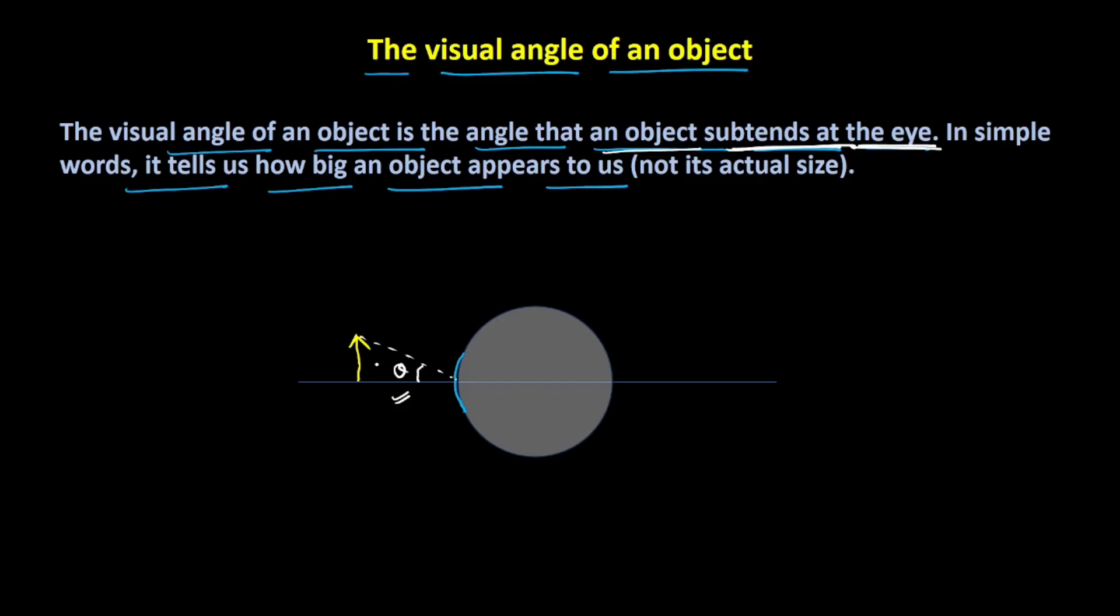More this angle, the bigger the object will appear to us. The light ray from this object will be meeting at a point on the retina and here the image would be created. More this angle means more this particular angle because they are vertically opposite angles, and hence a bigger image will be obtained on the retina.